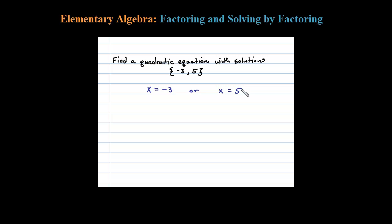Now what I'm going to do here is add the 3 and say x plus 3 would be equal to 0. If I subtract the 5, I'll have x minus 5 equal to 0. Think of these as factors.